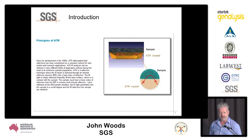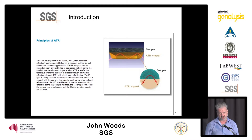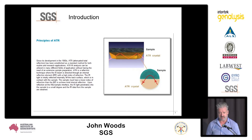Typically you can analyze in the order of two to three hundred samples per shift, and for each of those samples you will get the mineralogical data there and then. If you use that in conjunction with a portable XRF, that's two to three hundred samples from which you can get full mineralogical and elemental data.